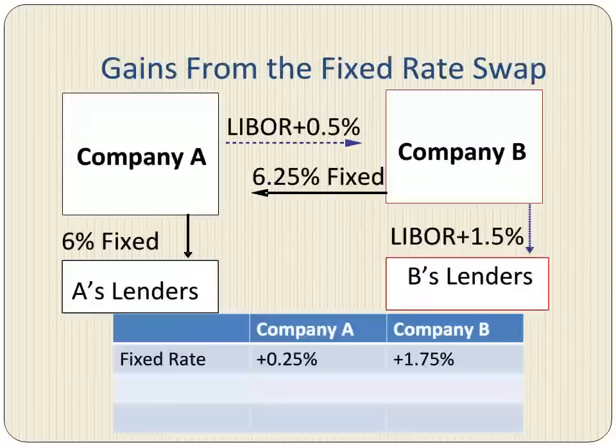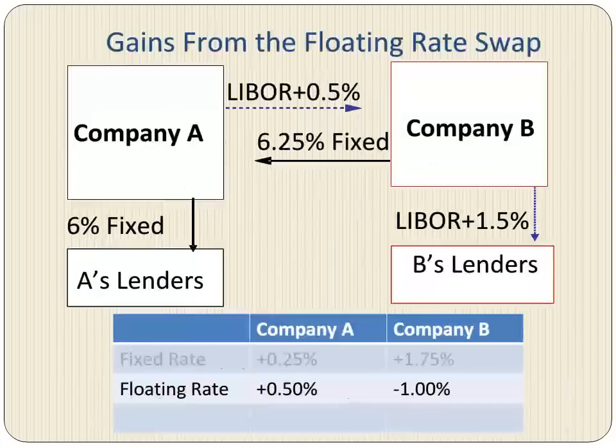Since Company A receives 6.25% from Company B but pays 6% to its lenders, Company A gains a quarter percent on the fixed rate. However, since Company B would have paid 8% for the fixed rate on its own but is paying a lower rate of 6.25% to A, Company B saves 8 minus 6.25%, which equals 1.75%. At the floating rate, Company A pays Company B LIBOR plus 0.5% instead of LIBOR plus 1% it would have to pay on its own. Thus, Company A saves half a percent at the floating rate.